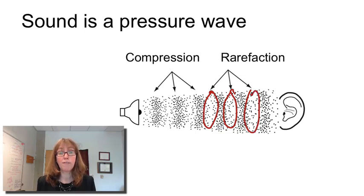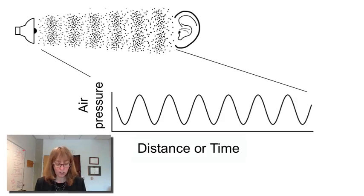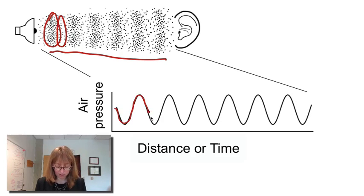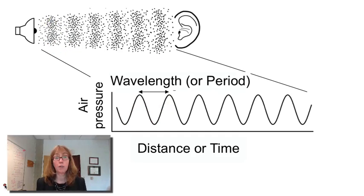You can make a graph of the air pressure versus time, and it looks something like this. So an air wave like this, which has areas of high density of molecules followed by low density of molecules, the air pressure would be plotted like so. And we can characterize this sound wave as having two features, having a wavelength and having an amplitude.